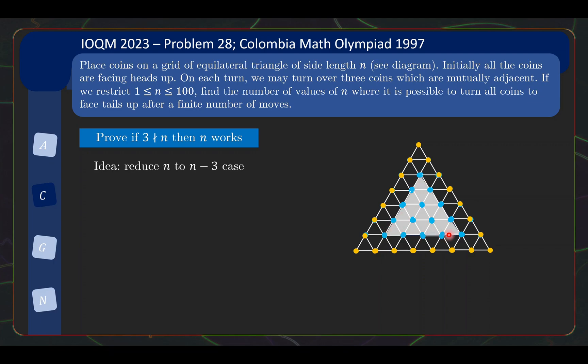So by taking the solution to the n minus 3 case, we now perform that particular series of steps and we will be able to flip all of these coins into tails up at the end. So this means given that the case n equals 1 and n equals 2 works, we can perform this reduction successively and show that all n with remainder 1 or 2 upon division by 3 will be valid n values. So that's one half of the problem done.